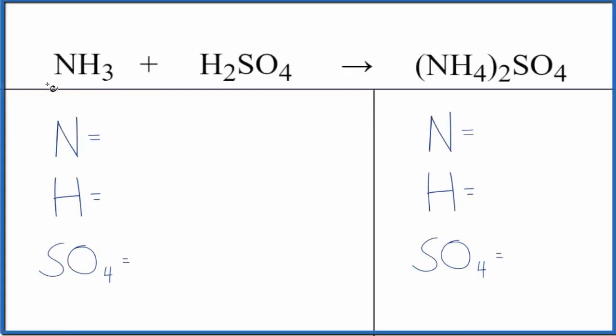Let's balance the chemical equation NH3 plus H2SO4. This is ammonia and this is sulfuric acid. We'll also look at the type of reaction and then the states.